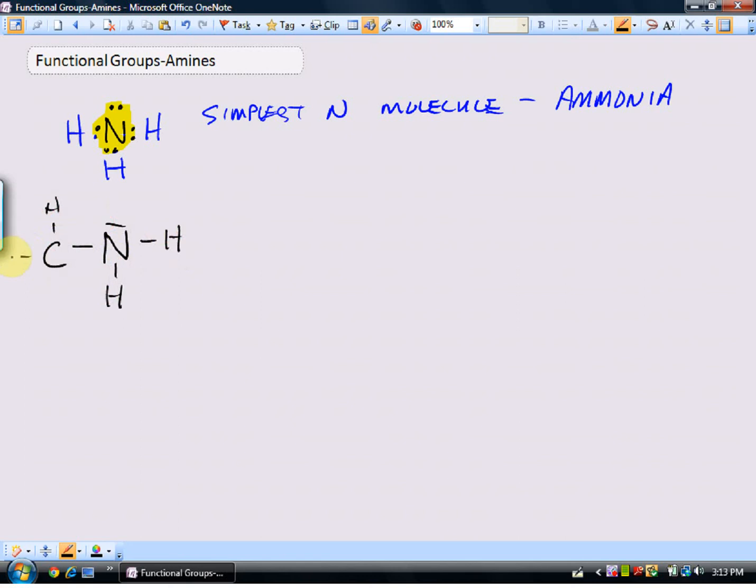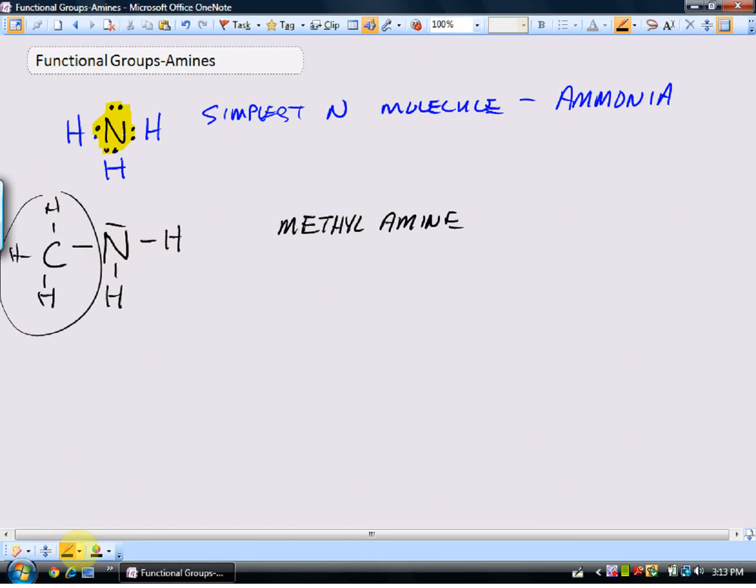So if I fill in all the hydrogens, this would be my simplest amine, and not surprisingly, that is called methyl amine. I hope that makes sense to you. So methyl, we've got a methyl group attached to the nitrogen, and the focus is the central nitrogen. So that's methyl amine.